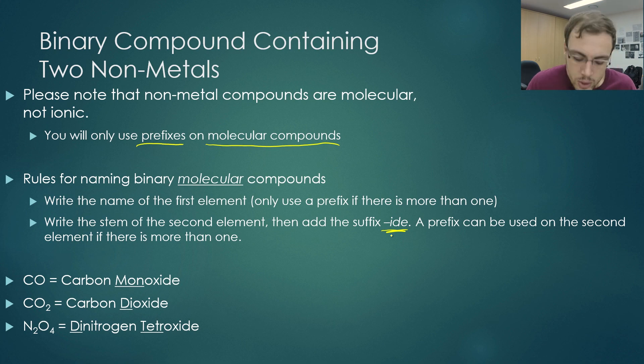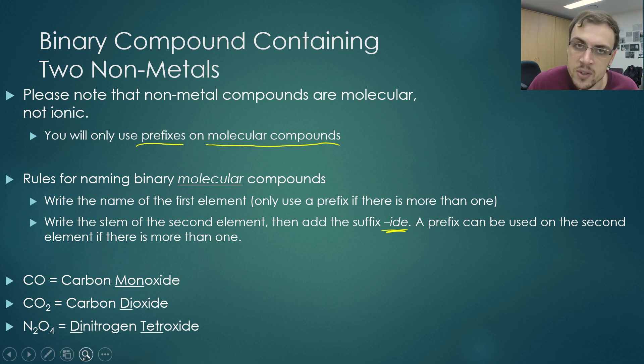Our last example, which again ties all of them together, is that we can see we have two nitrogens at the front here. We put di, nitrogen, and four oxygens at the end. We put tetroxide.